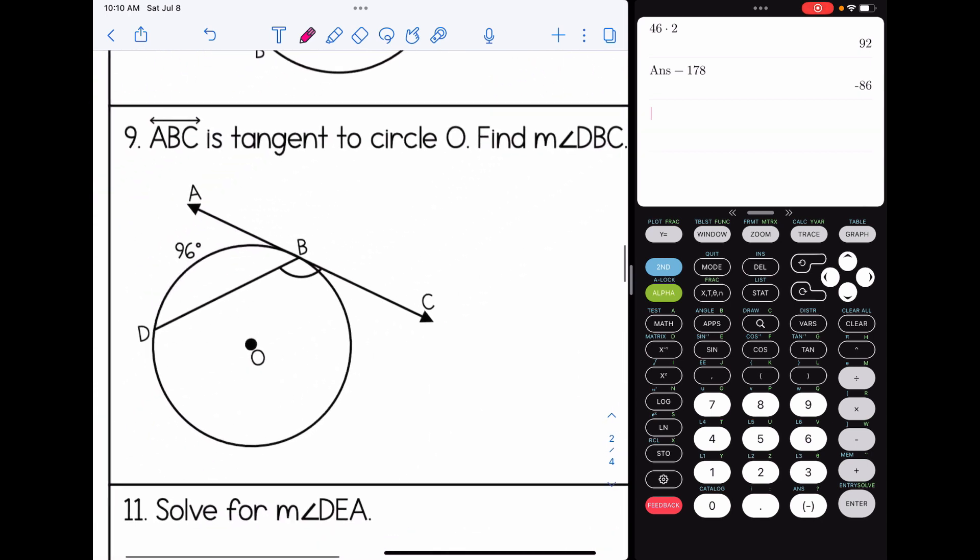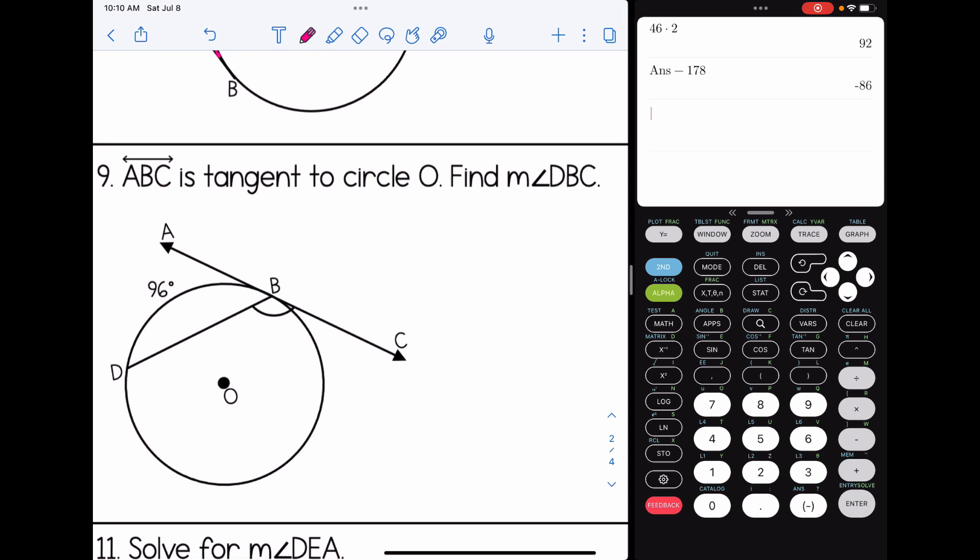Let's look at a couple more. Number nine, ABC is tangent to circle O. Find the measure of angle DBC. A couple of ways we could go about doing this. The first way that I see is, well, I have a vertex that's on the circle. So 96 divided by two means this angle is 48. But since this is a straight line, they have to add up to 180 degrees. So subtract 48 from 180. And I know that the measure of angle DBC is 132 degrees. The other option would be to find the value of this arc over here and then have that. That would also give you the same answer of 132.